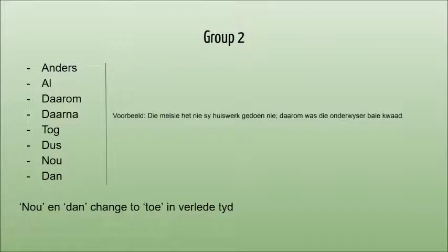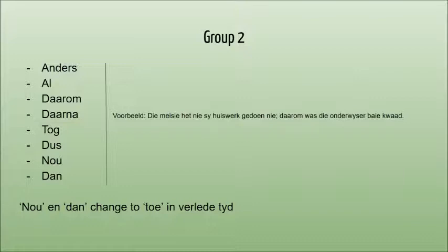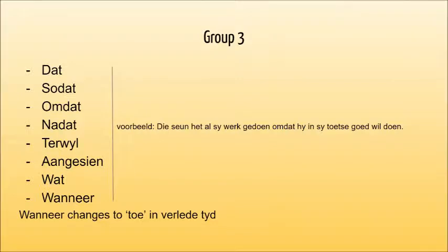In group 2, after the first sentence, you insert the conjunction. Then the verb in position 1 from the second sentence moves to immediately after the conjunction. The rest of the sentence stays the same. A few examples of words in this group are des, au, darom, dan, and more. Des and darom get a semicolon placed before them.